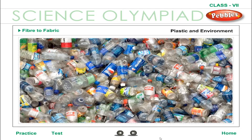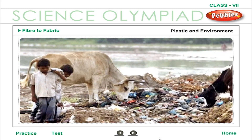Plastic and the environment: a material which gets decomposed through natural processes such as action by bacteria is called biodegradable. A material which is not easily decomposed by natural processes is termed non-biodegradable. Animals, especially cows, eating garbage often swallow polythene bags and food wrappers. The plastic material chokes their respiratory system or forms a lining in their stomachs and can cause their death.